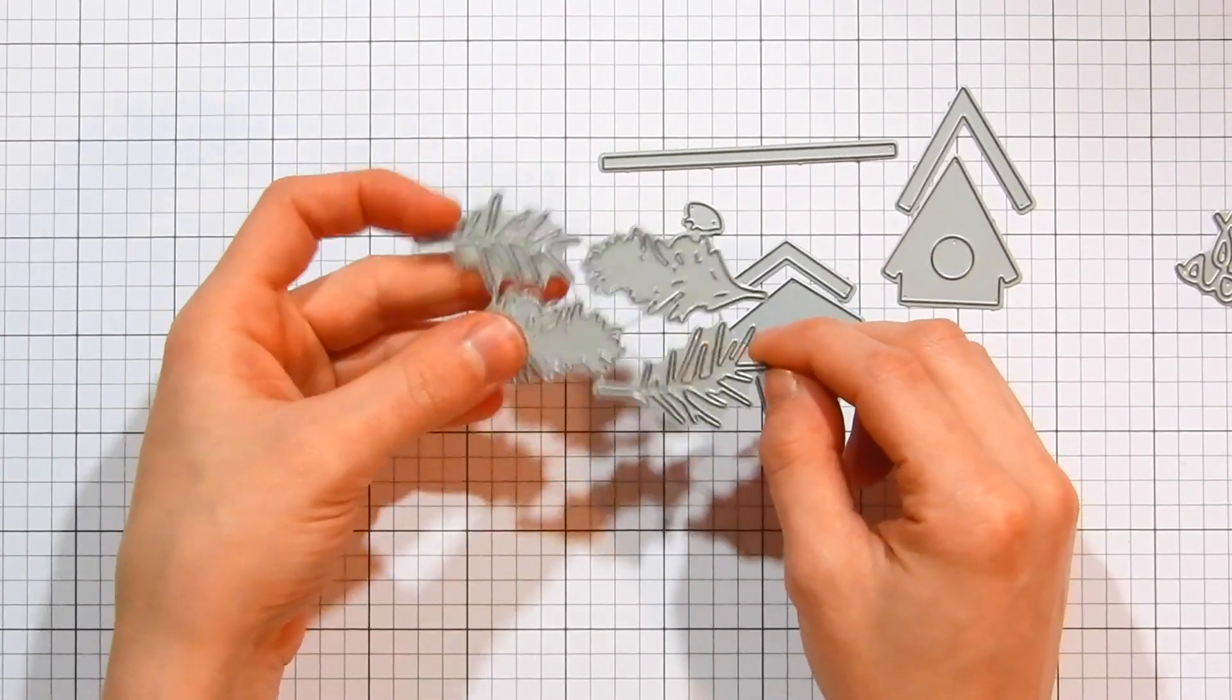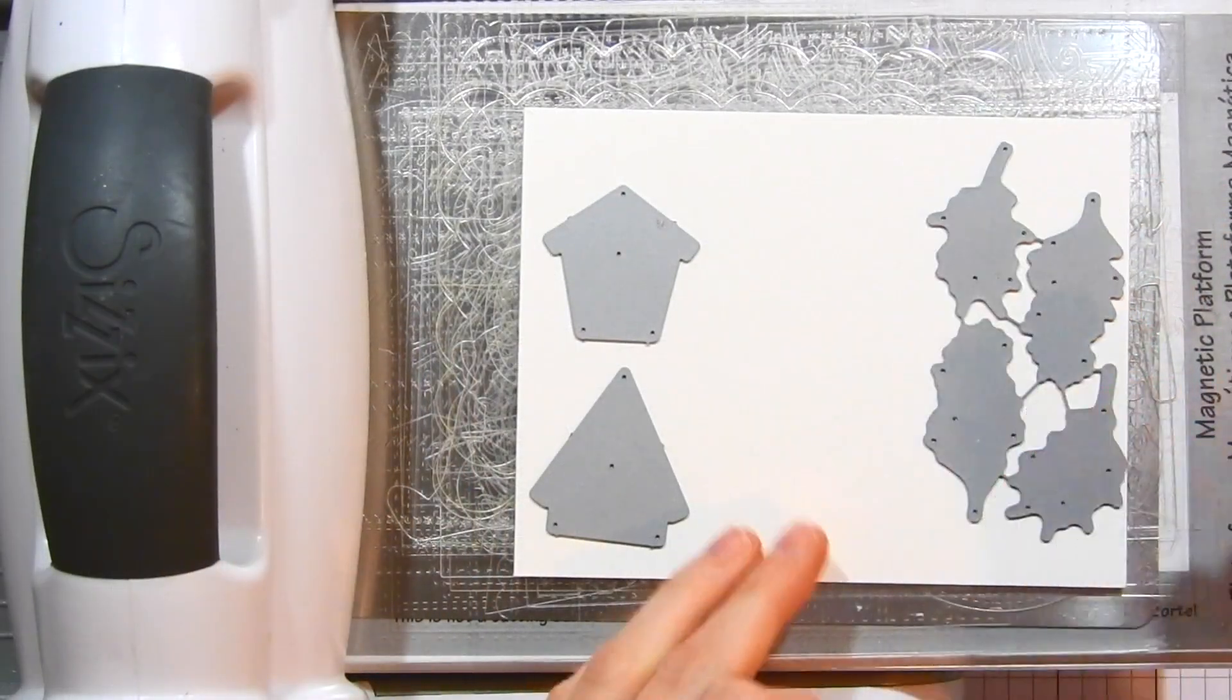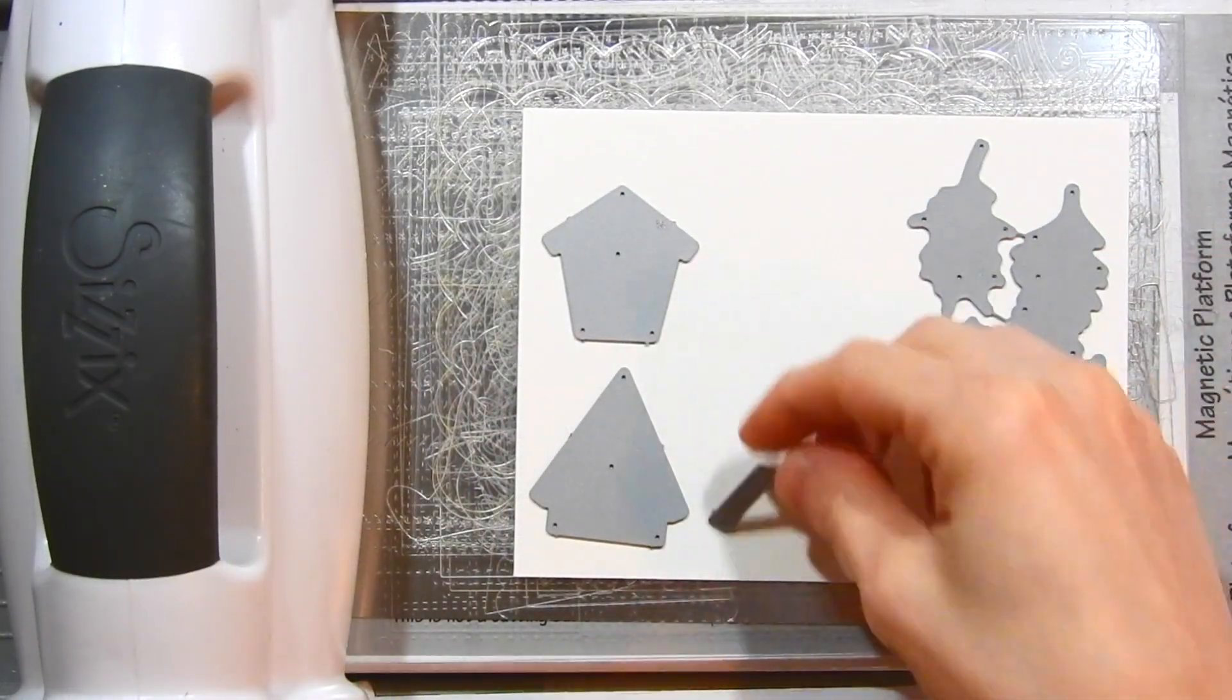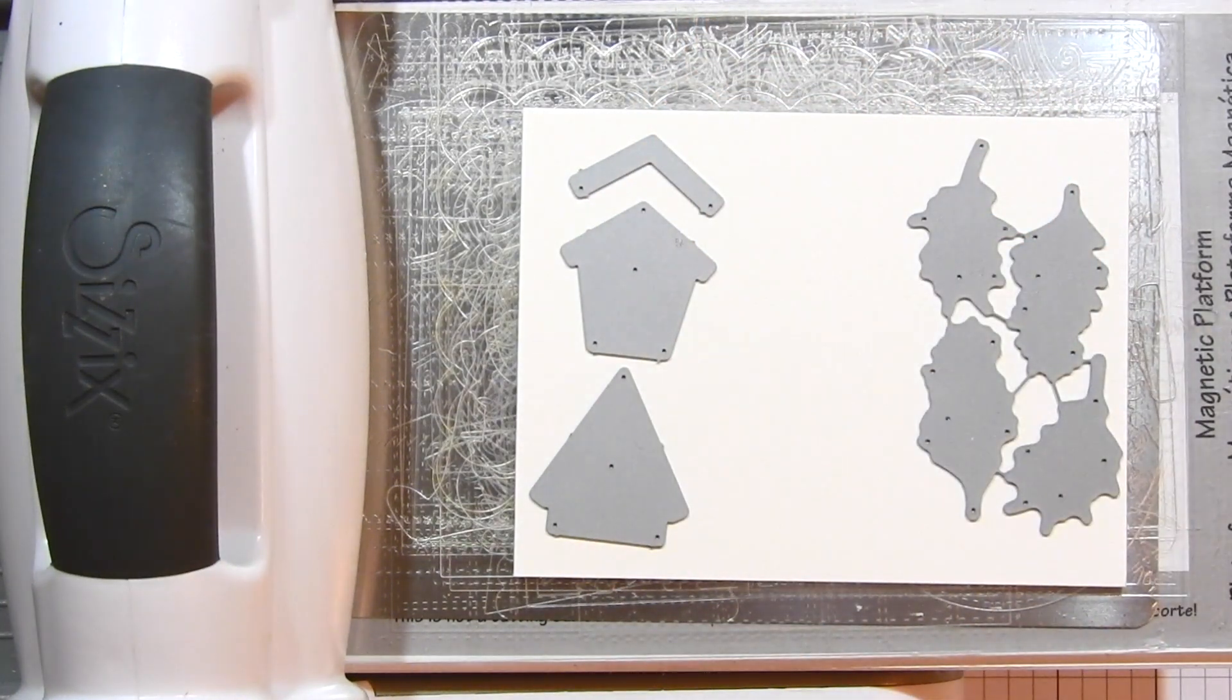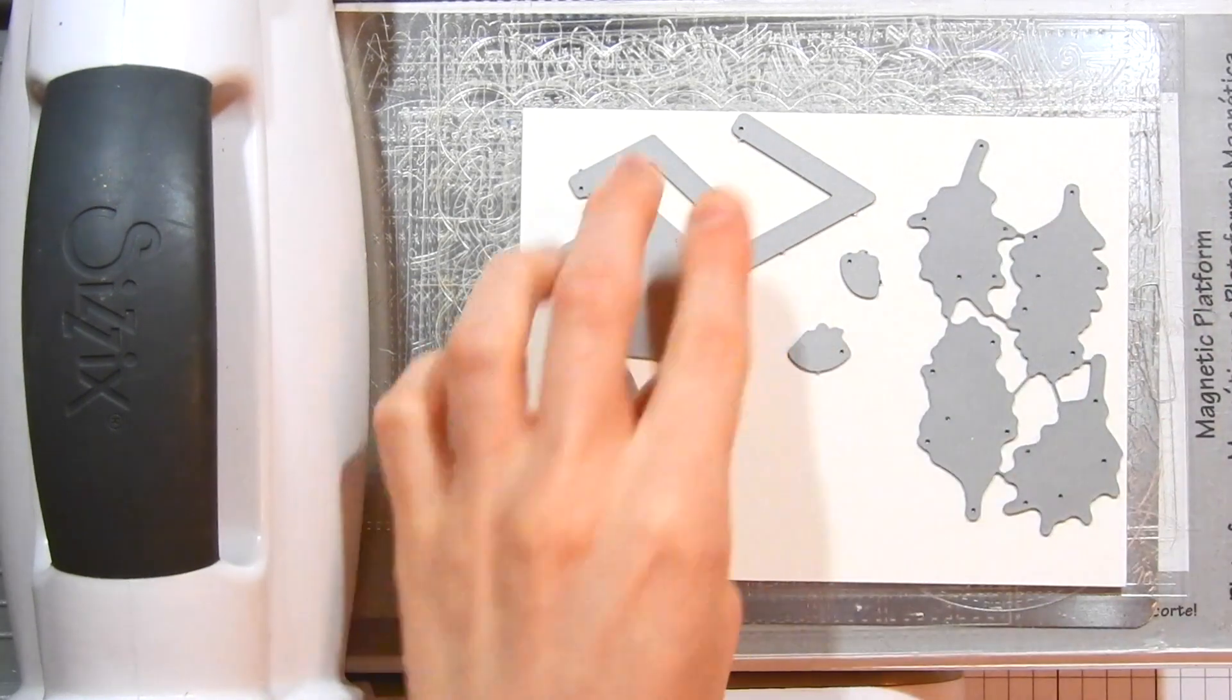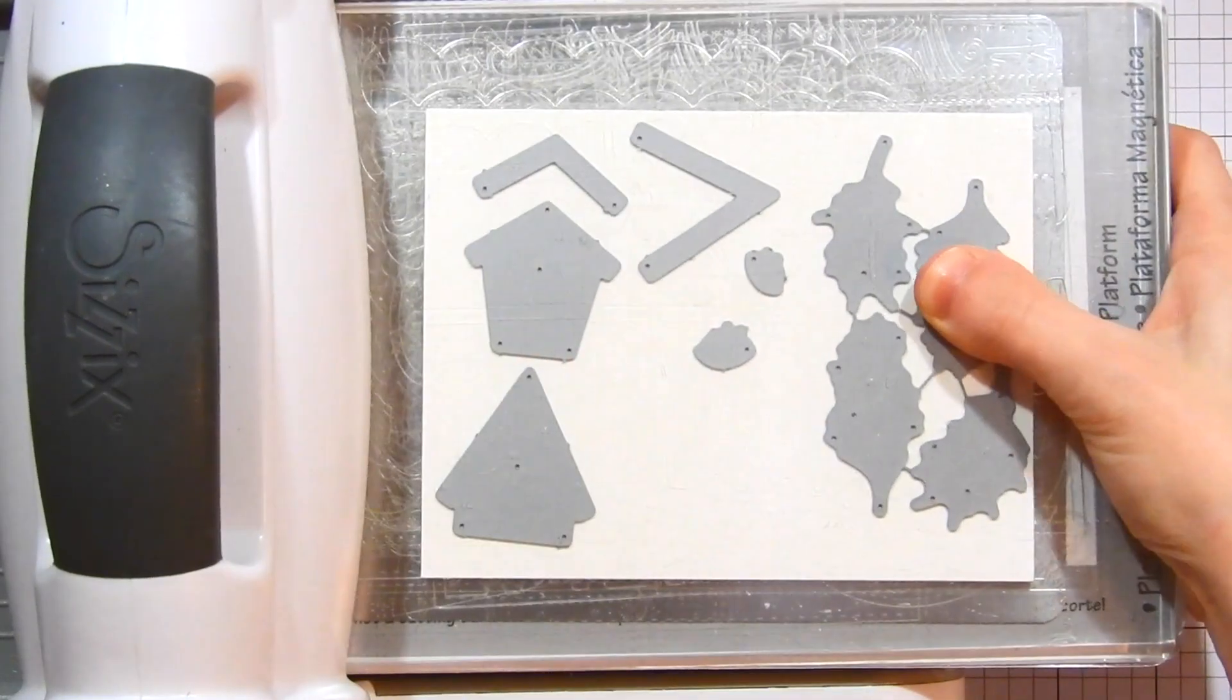And then finally we're going to be using this wreath builder die set, which is perfect for not only creating a wreath as the name suggests, but it's also really fun to create some great pine bough accents on your cards, which is what we're going to be using them for today. Now I'm going to get started by applying the dies into my Big Shot machine onto some watercolor paper.